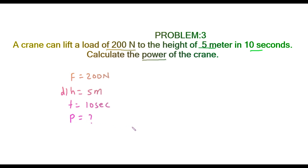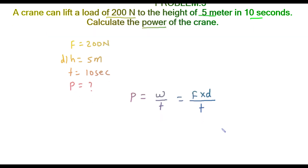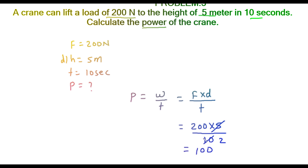We know that power = work done ÷ time = (force × distance) ÷ time. Substituting: force = 200 N, distance = 5 m, time = 10 s. So power = (200 × 5) ÷ 10 = 1000 ÷ 10 = 100. The unit of power is watt, so the required power of the crane is 100 watts.